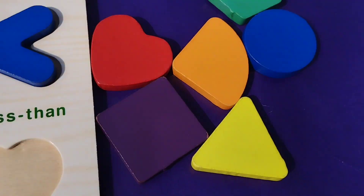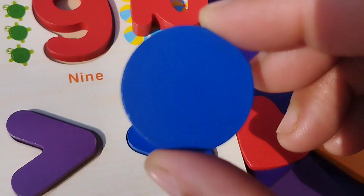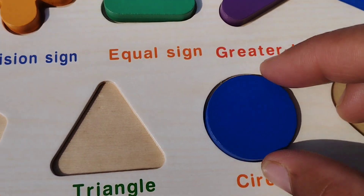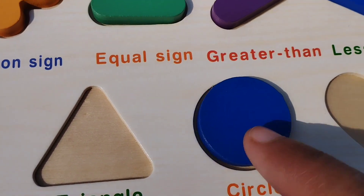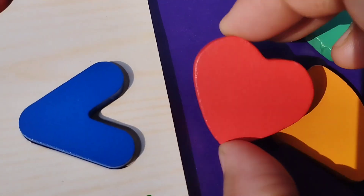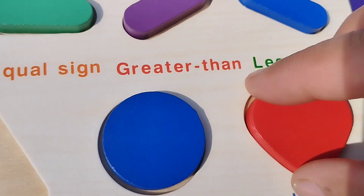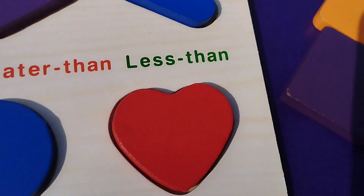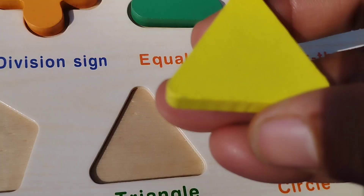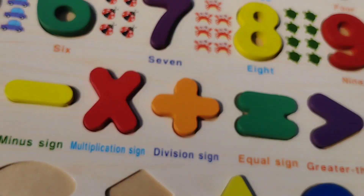Let's learn some shapes. The first shape is circle. This is circle shape. The next one is heart. This is heart shape. The next one is triangle. This is triangle shape.